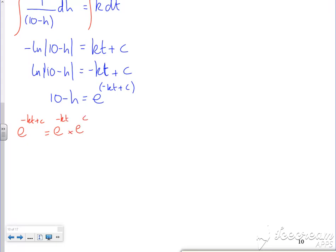That's e^(-kt) times e^c. c is a constant, e is a constant, so together it's a constant and I'll call it A. So 10-h = Ae^(-kt). We'll see this simplification enough before the exam to be comfortable with it.